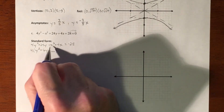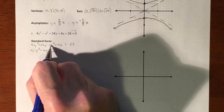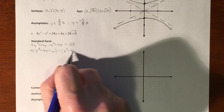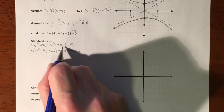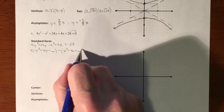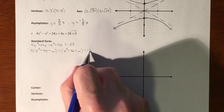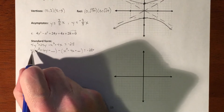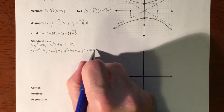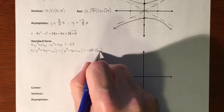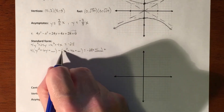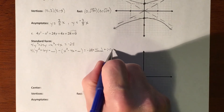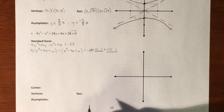Technically I'm factoring a negative out of the x² term, which means the positive 4x turns into negative 4x because we're factoring the negative out of a positive. I'll add something here to complete the square. On the other side, whatever I add to the left I must add to the right — but there's a 4 that will get distributed to it, so I'm planning for 4 times something. A negative 1 will also get distributed to whatever I add for the x terms.